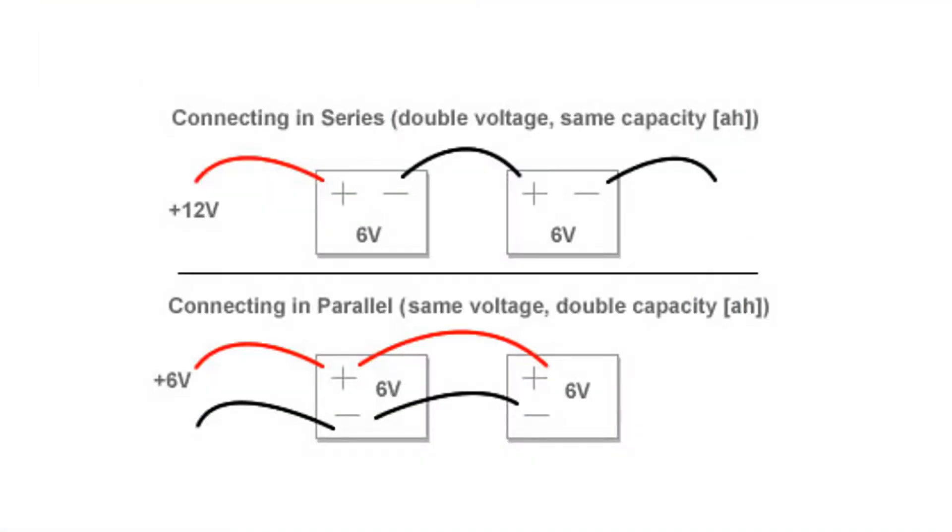When I connect two batteries in series, positive to negative, I sum their voltages together, but do not change the amp hour capacity. When I connect two batteries in parallel, positive to positive and negative to negative, my voltage stays the same, but I sum their amp hour capacities.